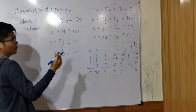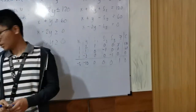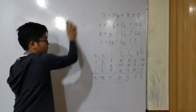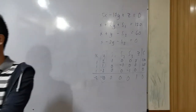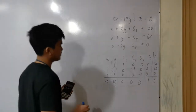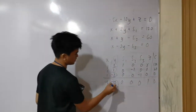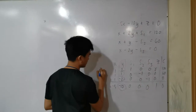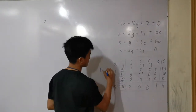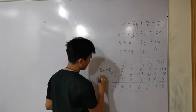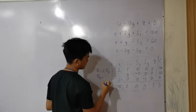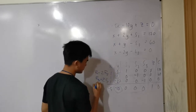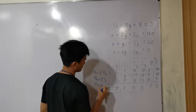For the next step, we need to make the other entries in the pivot column equal to zero. To do that, row 1 will be updated by subtracting 2 times row 2. Row 3 will be updated by adding 2 times row 2. And row 4 will be updated by adding 10 times row 2.